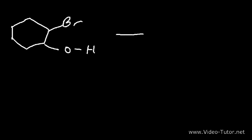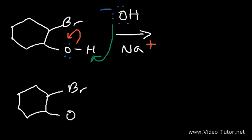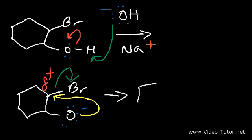Once we have the halohydrin product, we react it with sodium hydroxide. The sodium ion is a spectator ion. The hydroxide ion, being a strong base, abstracts the proton from the alcohol, placing a negative charge on the oxygen — forming an alkoxide ion, which is a good nucleophile. This oxygen attacks the adjacent carbon, which has a partial positive charge, and kicks out the bromine atom. That's how the epoxide forms under basic conditions.